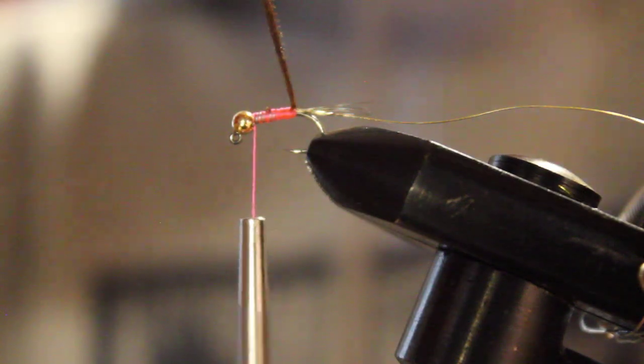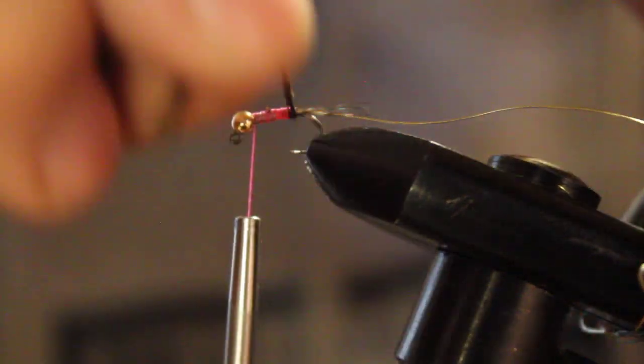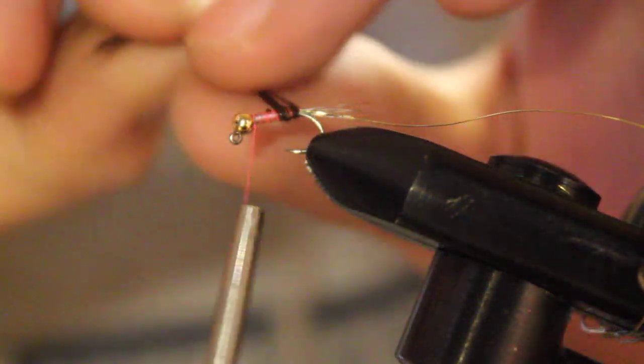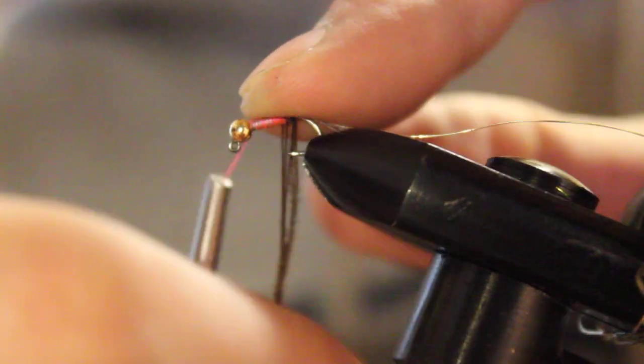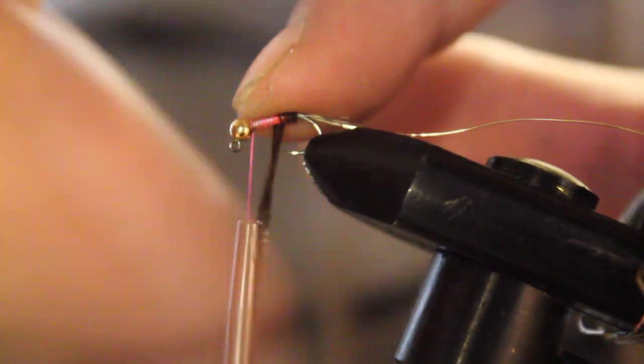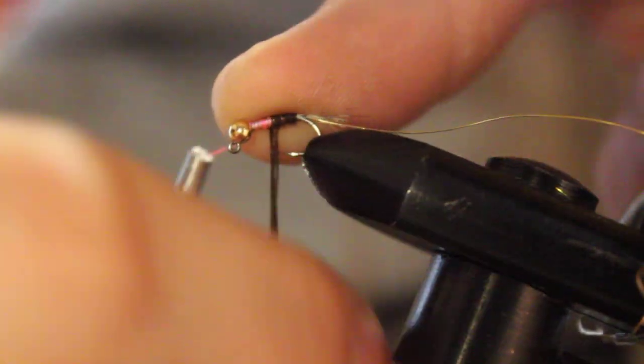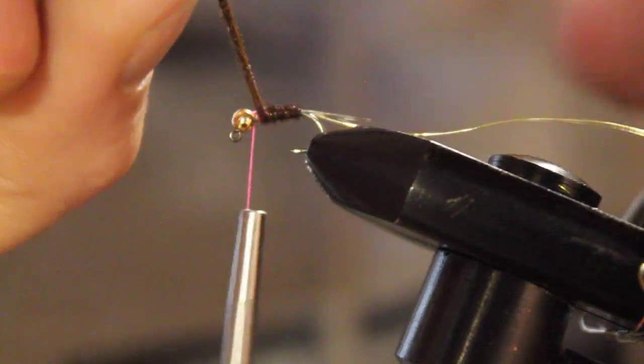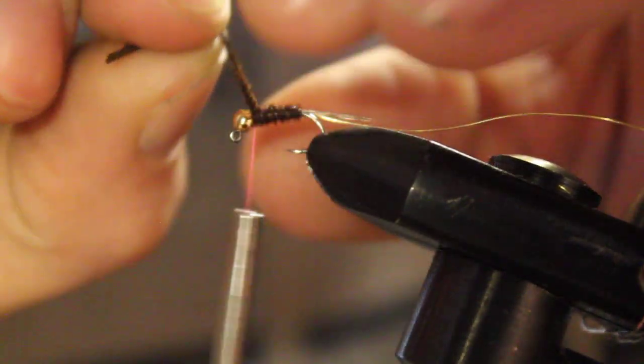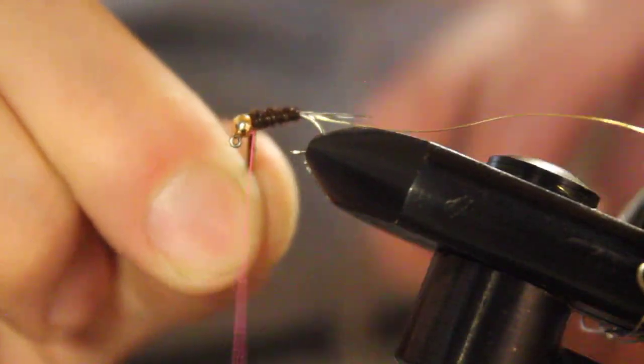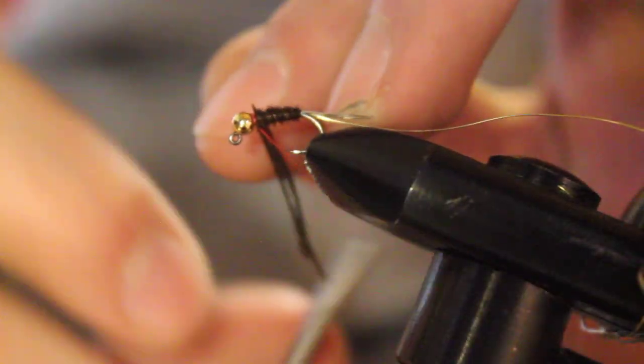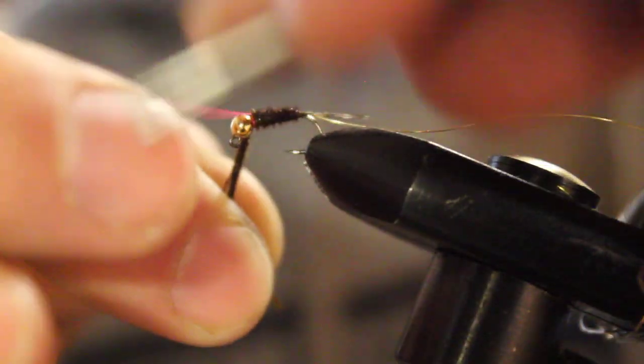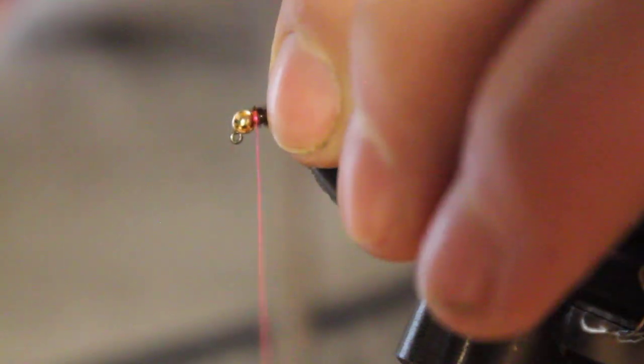Right behind the eye, I'm going to take our pheasant tail. We are going to lightly wrap it towards us. And remember what way you wrap it, because you are going to want to wrap that wire the opposite way. Sometimes that pheasant tail will fall off the back here, so I like to take my finger and hold it down. Just get nice tight wraps in there. And you are going to want to do this all the way up to where your thread is. Now we are going to tie this off right behind the eye and snip them as close as you can.